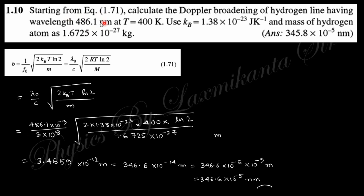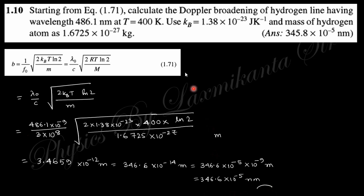Question ten: starting from equation 1.71, calculate the Doppler broadening of a hydrogen spectral line of the given wavelength, with the speed of light at 3×10⁸ m/s. Given the temperature, Boltzmann constant, and mass of hydrogen, substituting these values gives the Doppler broadening in nanometers.